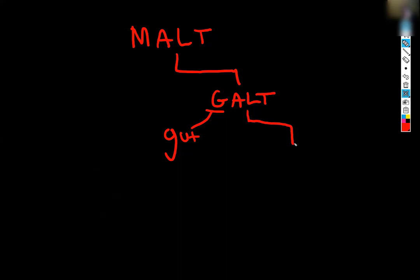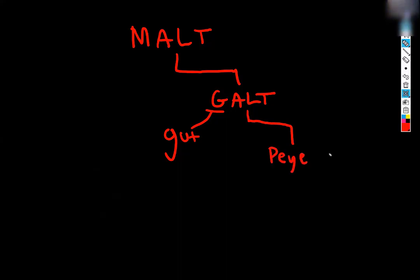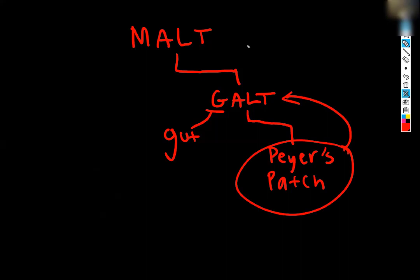Under GALT, Peyer's patch is a specific type. So it's still MALT, but it's also GALT, and it falls under its own category because it has a very specific location and appearance — it's in the ileum and tends to be more strongly nodular than the MALT elsewhere in the GI tract. So it's really a series of nested terms: Peyer's patch is a type of GALT, and GALT is a type of MALT.